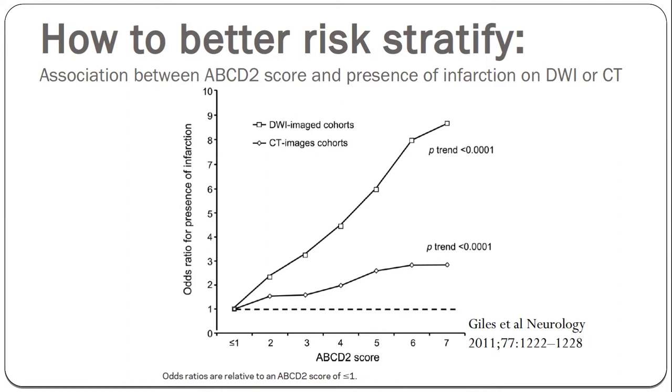So if we can't use a clinical scoring system, is there another way to stratify patients? A lot of attention has been put on imaging. One paper from Britain showed that as the ABCD squared score went up, the likelihood of infarction on MRI or CT was higher — some correlation between the clinical score and vascular or tissue abnormalities on MRI. From the same paper, MRI abnormalities were associated with a 7% risk in the next seven days, while absent DWI abnormalities meant a much lower risk.